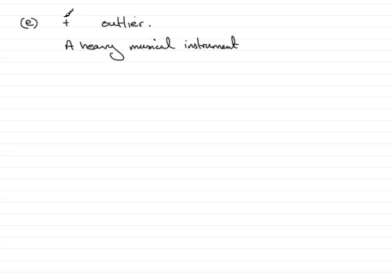Now for part D, the plus is an outlier. That's an extreme value. You can actually write 'or extreme value.' And what would it signify? Any heavy musical instrument.